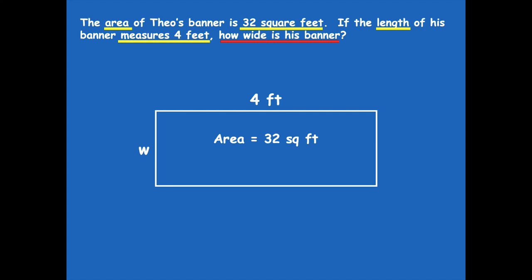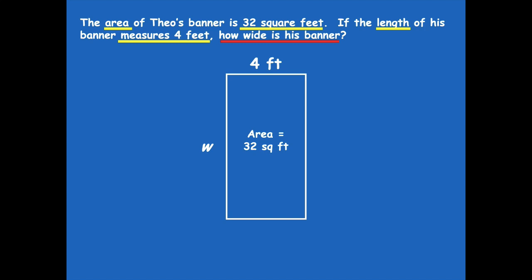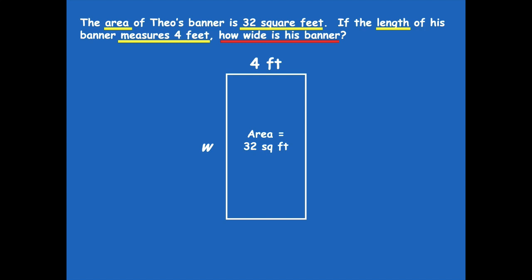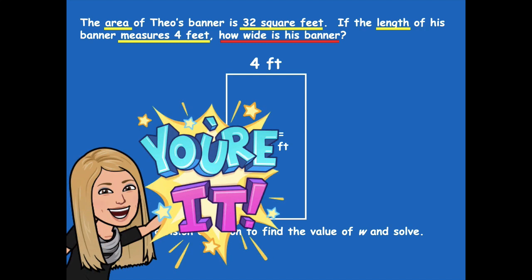Make sure to pause if you need more time. Otherwise, your new rectangle could look similar to this — the width is much longer than the length. So how do we find the value of w? Do we add, subtract, multiply, or divide? For this one we're going to divide, because when we know the total area and one side length, we need to divide. Write a division equation to find the value of w and solve. Pause the video, write your equation, solve for w, then click play when you're ready.